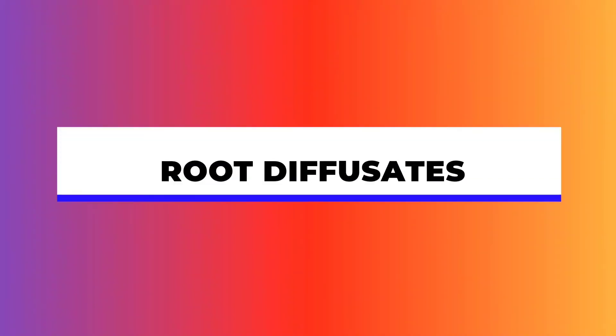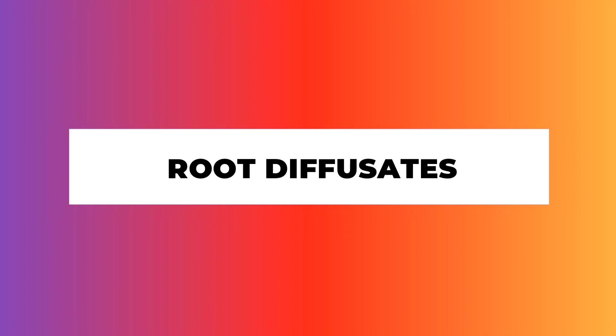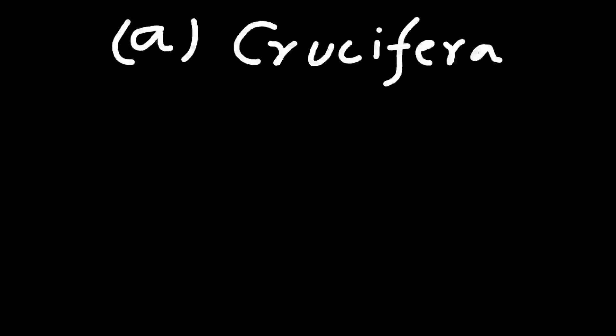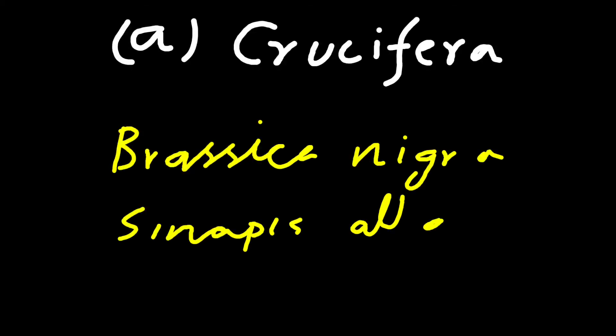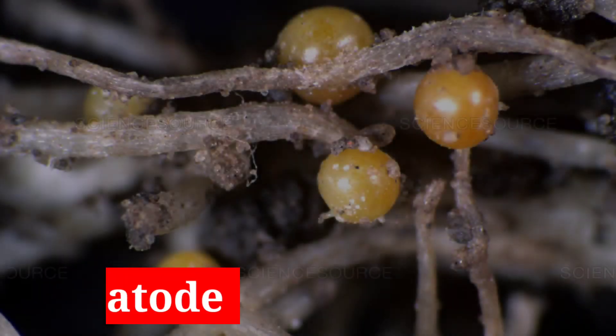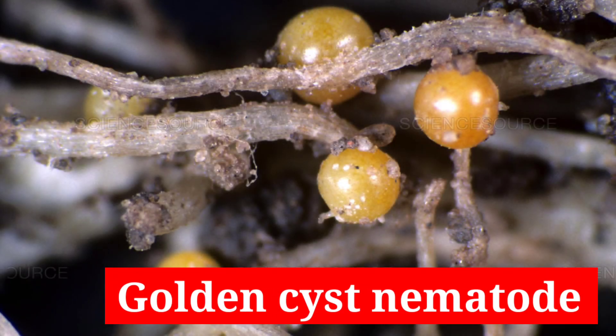Now we will talk about some of the root diffusates. The first one is the root diffusates of cruciferous plants, Brassica nigra and Sinapis alba. These cruciferous root diffusates are used as organic insecticides because of the presence of isothiocyanates, and they are effective against the golden cyst nematode of potato.